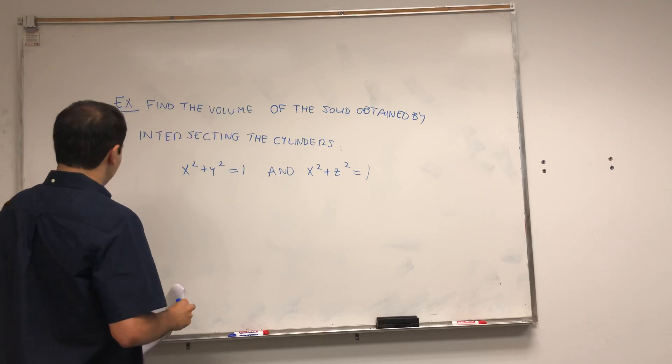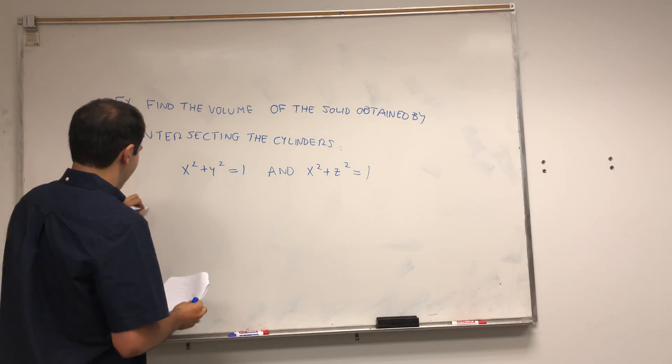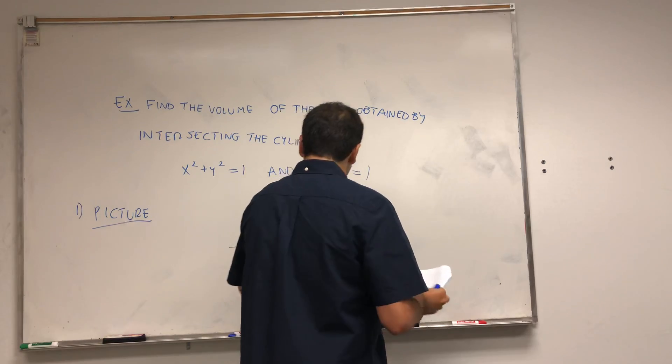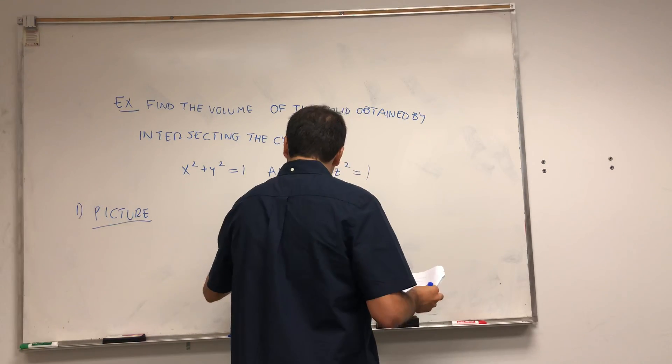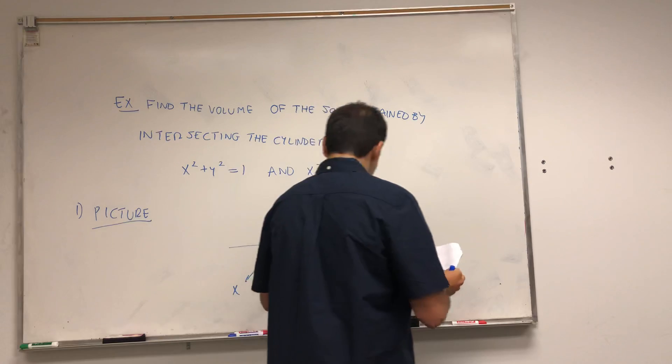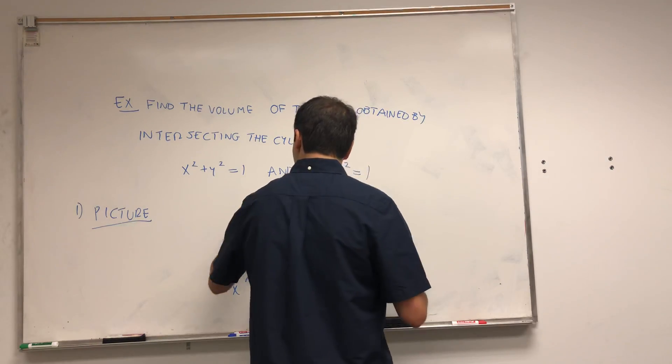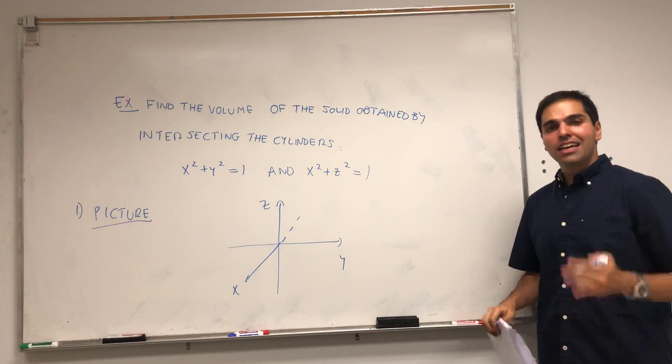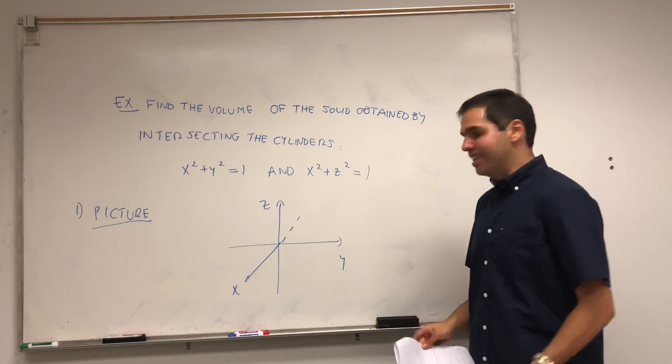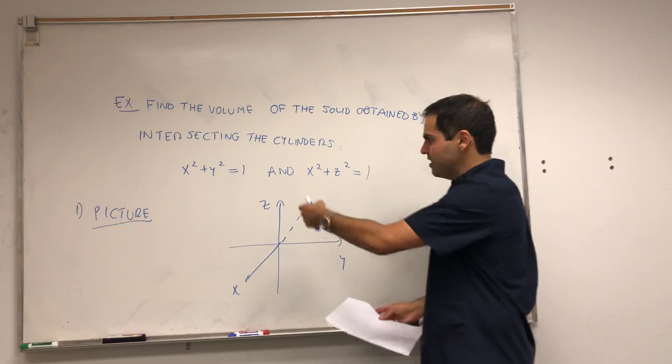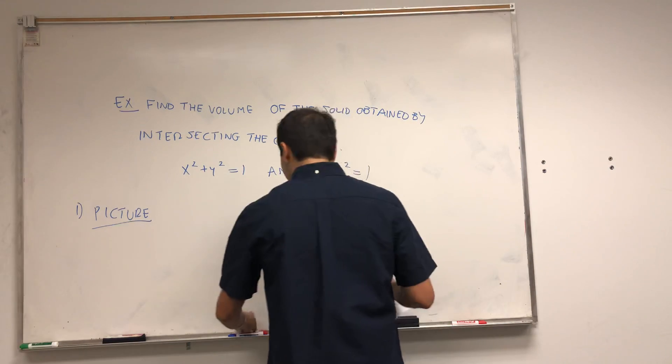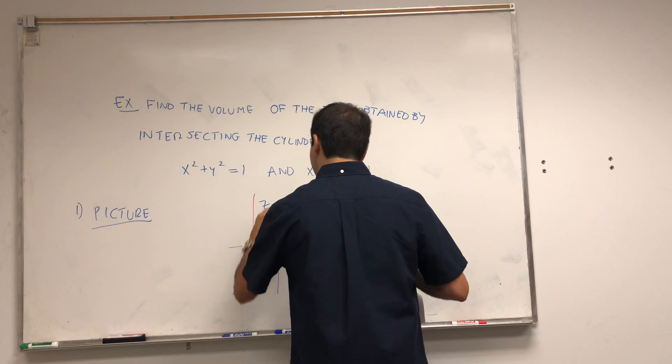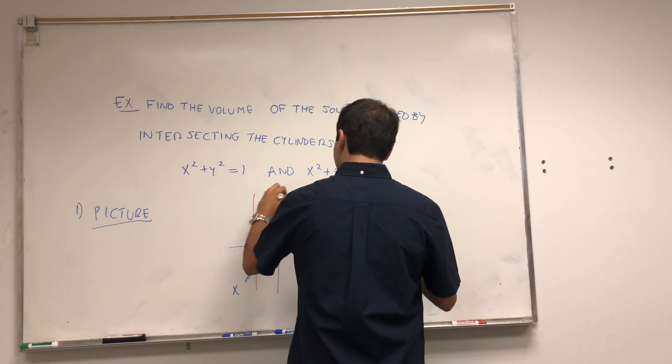First of all, let me draw a picture. Again, as is usual in multivariable. So we have x, y, and z on the one hand. x squared plus y squared equals 1 doesn't depend on z. And whenever something doesn't depend on z, you can just translate it in the z direction. So it's like the circle x squared plus y squared equals 1, but in the z direction.